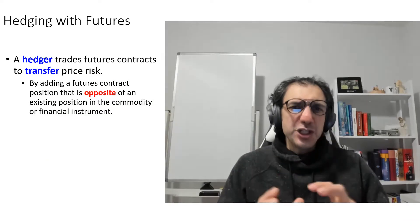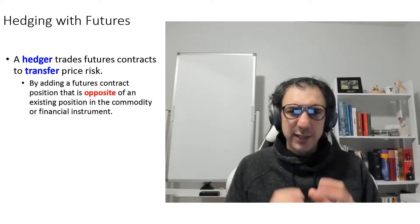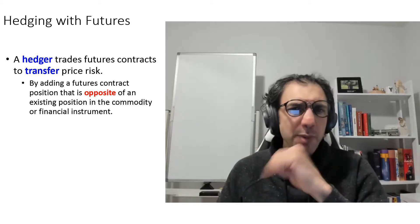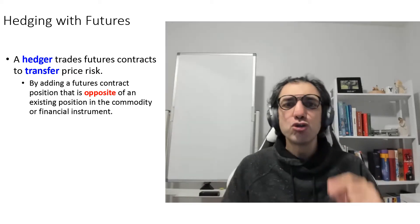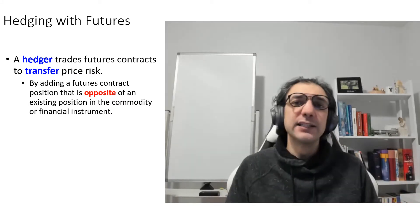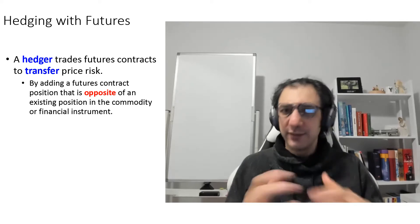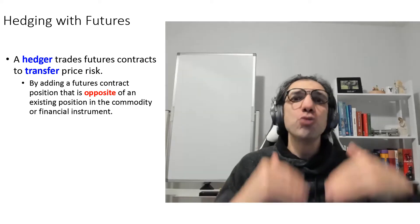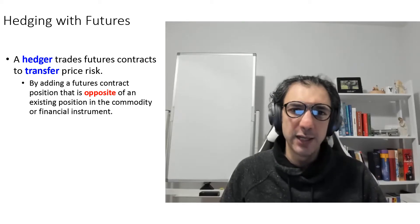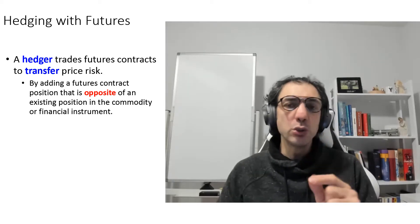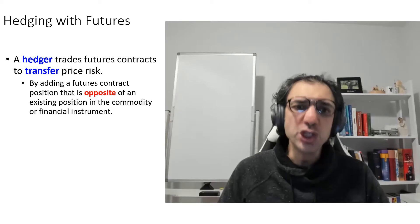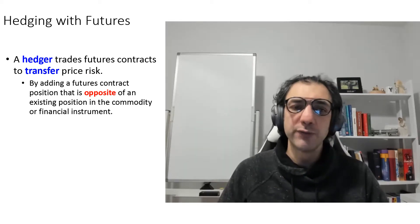We talked about hedging and speculation last session, where I mainly focused on speculation. Now, let's talk about hedging. As we remember from the previous session, the goal of a hedger is to use the futures contract to transfer the price risk. So, you're afraid that the underlying asset is going to increase or decrease in price. To protect yourself and reduce the risk, you use the futures contract, which has the opposite position compared to the existing position — the commodity or financial instrument.